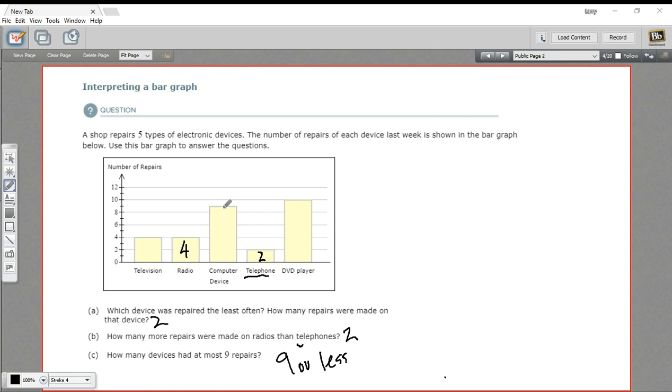Looks like the computer is right between the eight and the 10, so this must be nine. We know this one's two. This one's four. This one's also four. This one's 10. So this one is not nine or less, but the rest of them are. So one, two, three, four different devices had nine or less, or at most nine repairs. So that is the answer to that question.